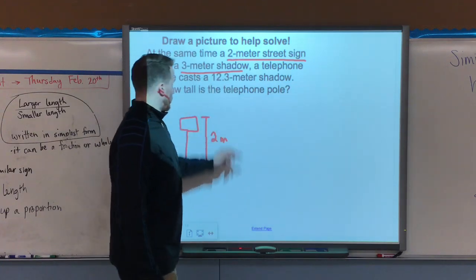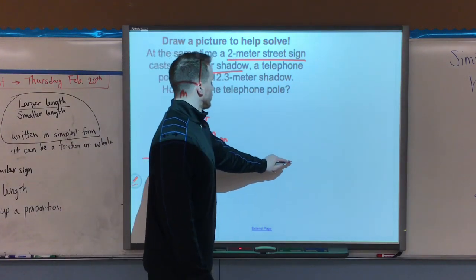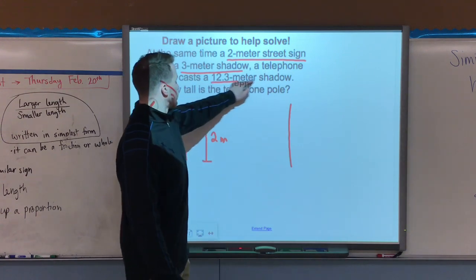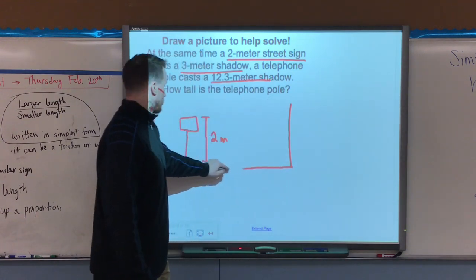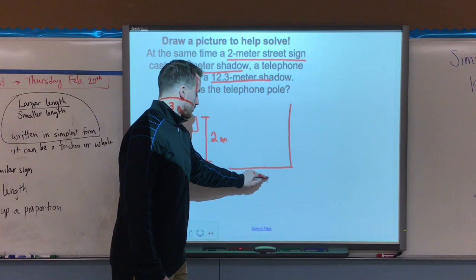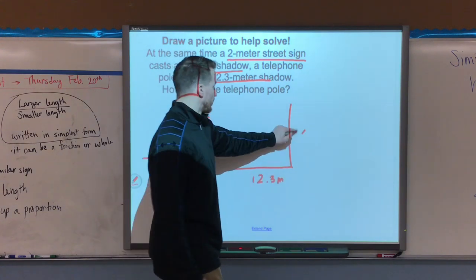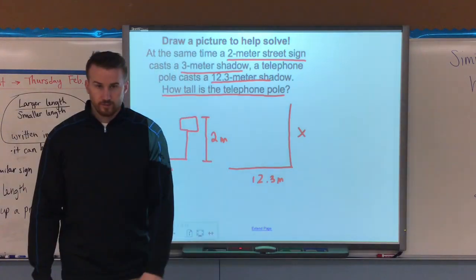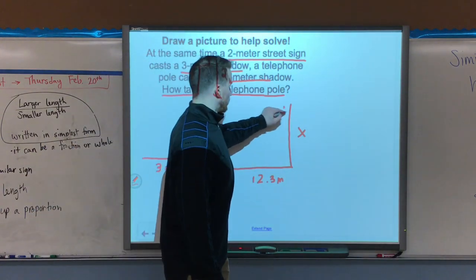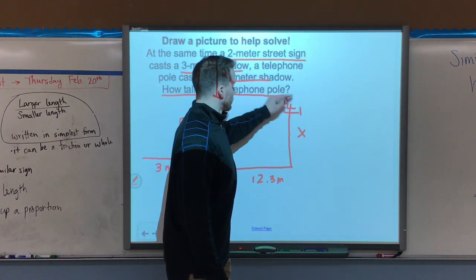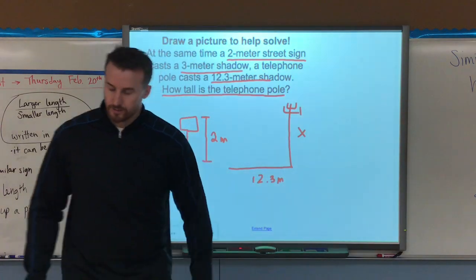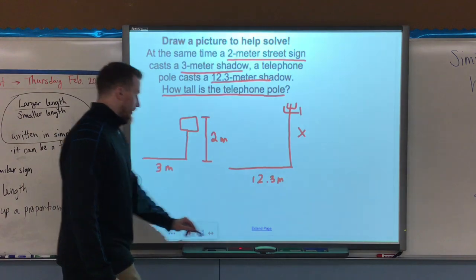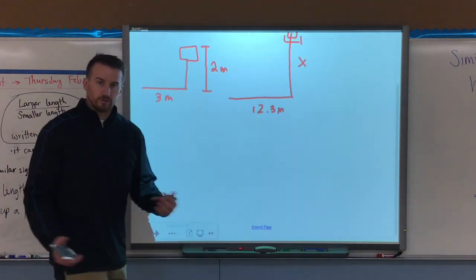Now I know a telephone pole, so here's my telephone pole, casts a 12.3 meter shadow. So then I know that the shadow here is 12.3 meters. I don't know the height, because they want to know how tall is my telephone pole. Telephone poles kind of look like this, old school ones at least. I need to know the height of x. I have my drawing here. Don't judge my drawing.